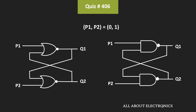If you closely observe these two latches, they are basically the SR latches. This latch is based on the NOR gate, and this input is actually the R input while this input is the S input. So for this NOR latch, this output will be Q while this output will be Q bar. Likewise, for this NAND gate based latch, this input is the S input while this input is the R input, and these two outputs are Q and Q bar.